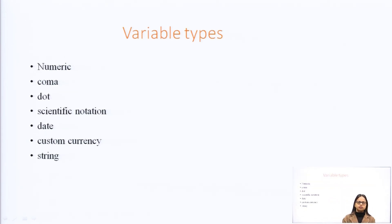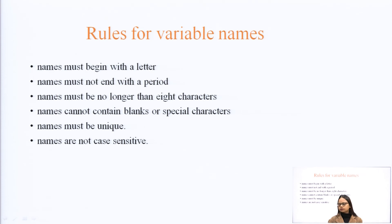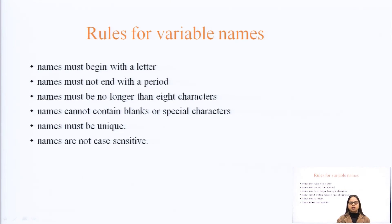Variable types include numeric, comma, dot, code, scientific notation, date, custom currency, and string. The rules for variable names are: names must begin with a letter, names must not end with a period, names must be unique, and names are not case-sensitive.